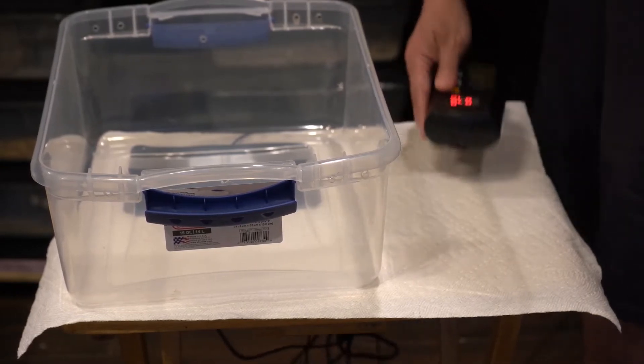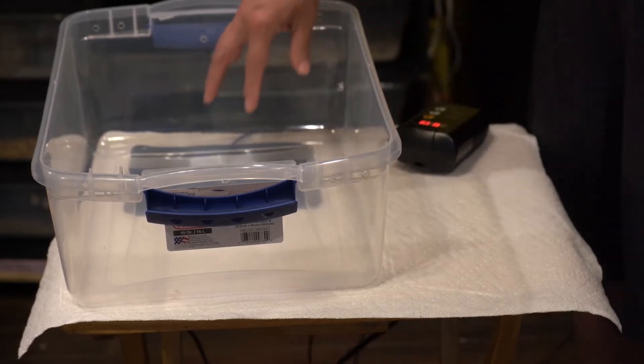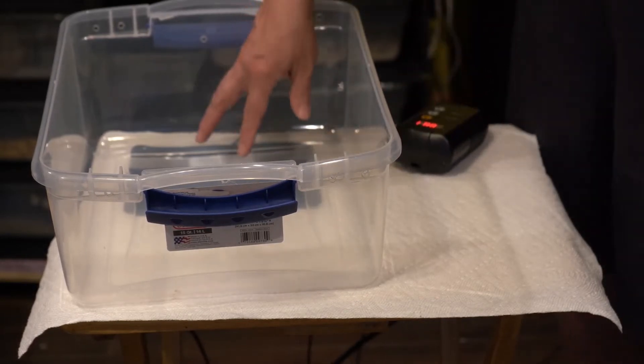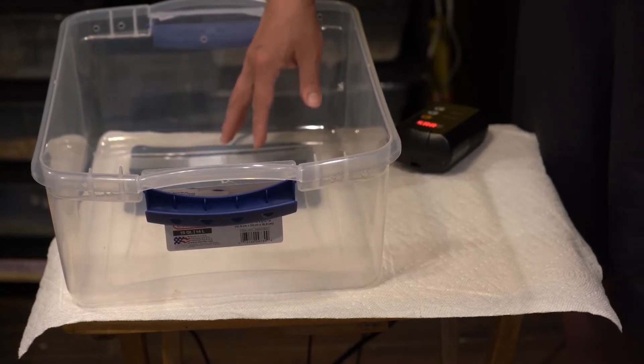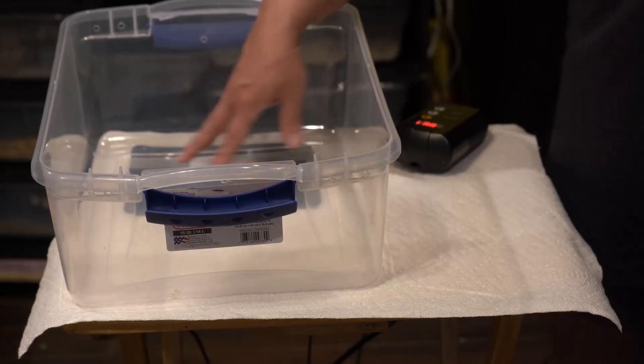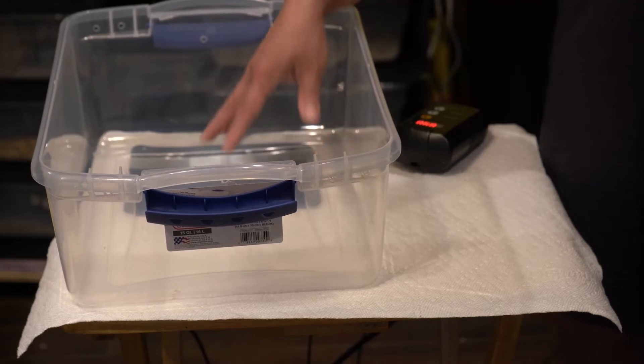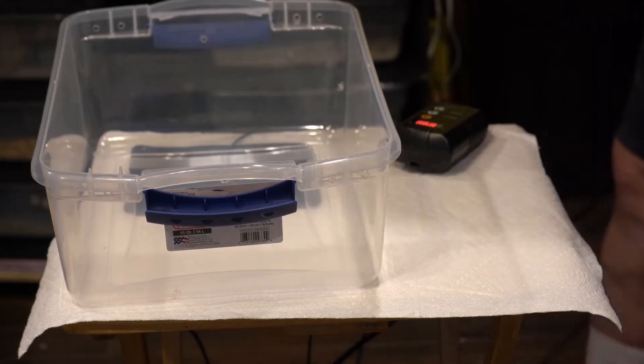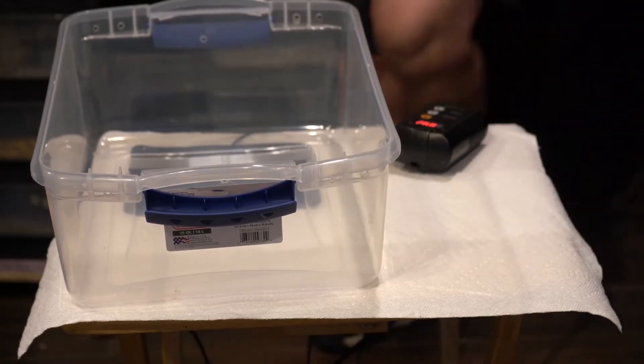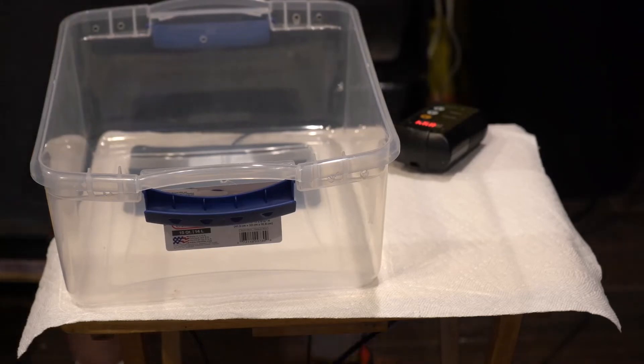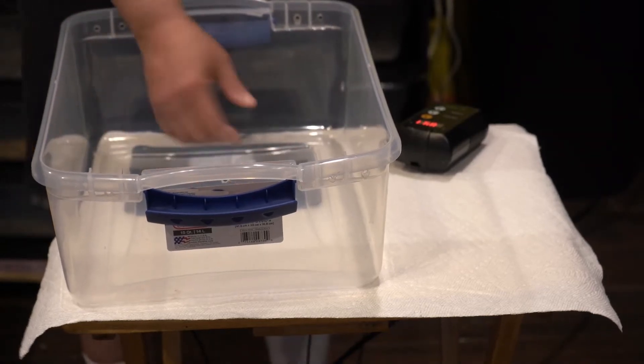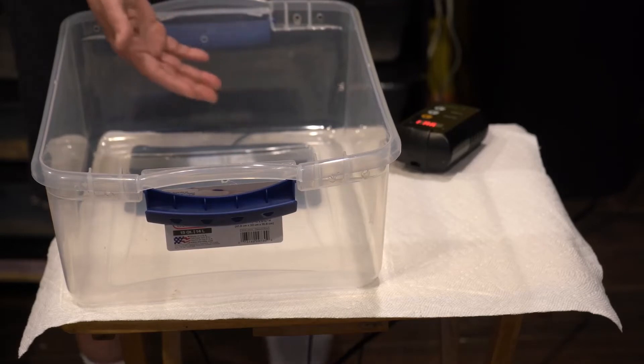Because the thermostat is controlling the heat on the heat mat, not inside the enclosure. So it's going to have to come off the mat, through the plastic, and then dependent on what substrate you put in there, whether you use the Reptichip or use paper towels, the heat is going to have to radiate up to get to your animal.